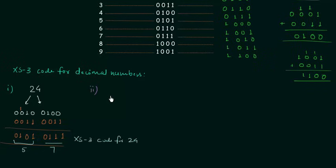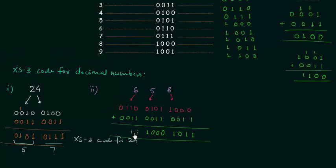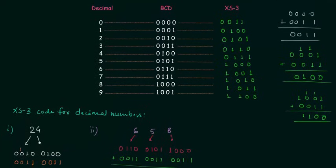In example number 2 we find XS3 code for 658. First we convert to BCD: 6 is 0110, 5 is 0101, and 8 is 1000. Now we add 0011 to each digit. The result is 1001 1000 1011. So the XS3 code for 658 is 1001 1000 1011.